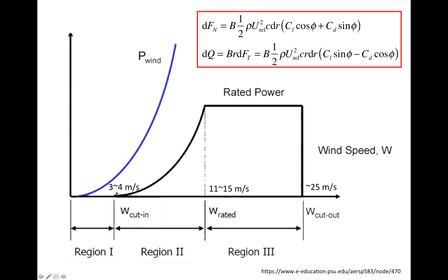In region two, the difference between the manufacturer's curve and the BEM-computed curve can be quite small. But in region one and also in region three, the differences can be quite significant. First, there is a cut-in wind speed, W cut-in. Below this particular speed, the wind turbine is not generating any power at all — either the blade is not rotating, or it's rotating but not actually producing power. This is called the cut-in speed.